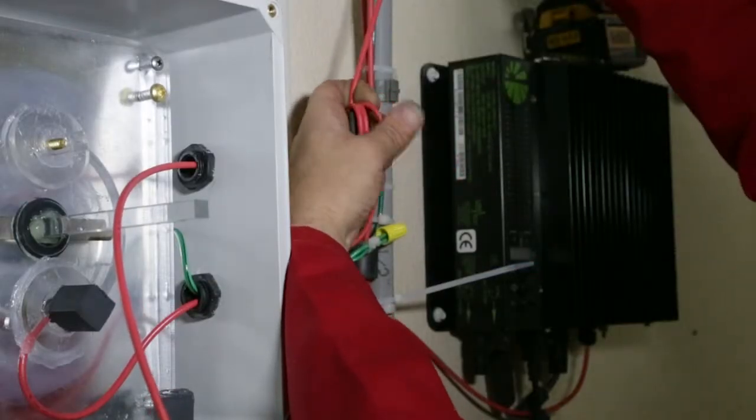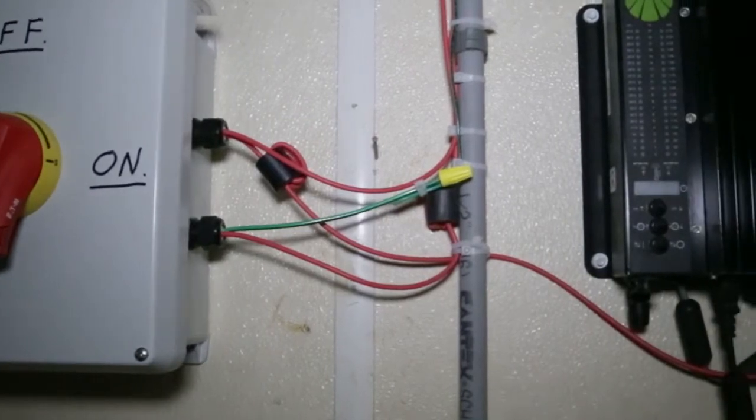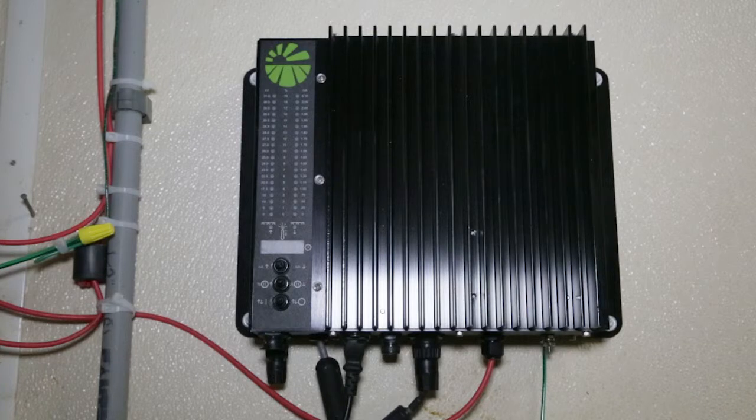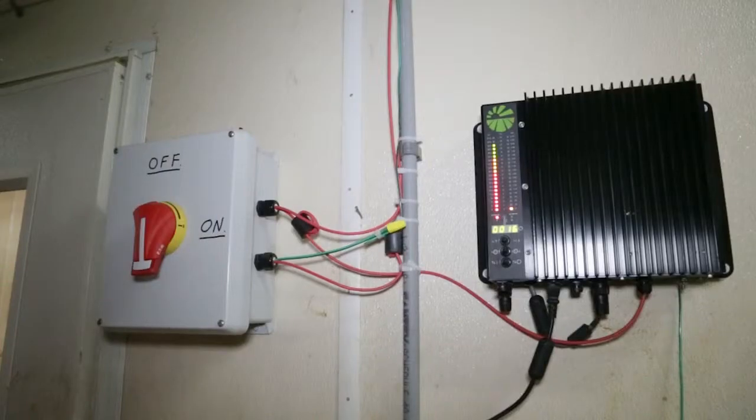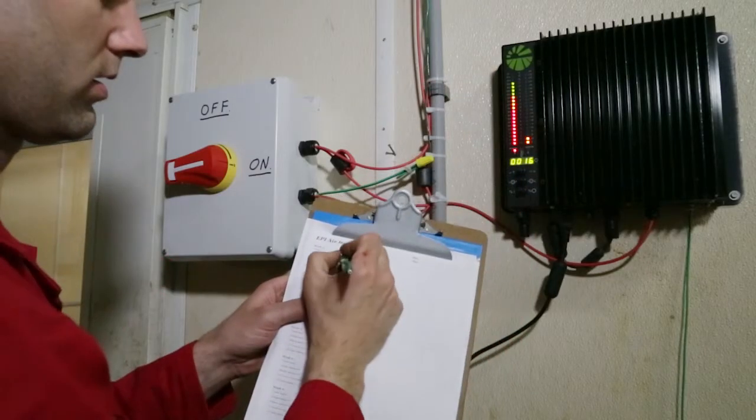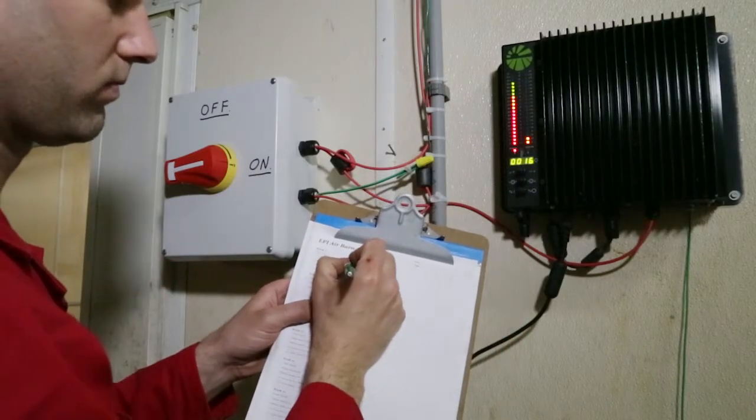Add ferrite collars to the high voltage wire and computer wire. Now plug in the power supply. Once the power supply is energized, the LED display will light up. The EPI air system is now cleaning the air. Observe and record the hour meter, KV level, and MA level.